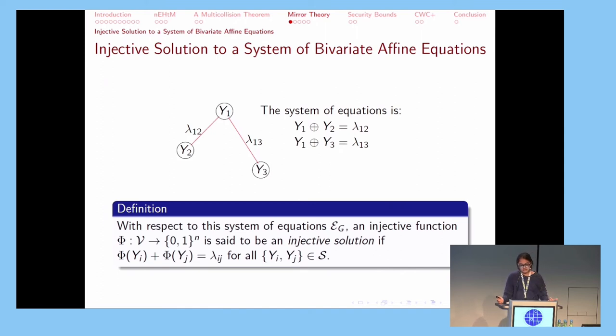The next tool that we have used is an extended version of mirror theory. For that, we first define the system of equations induced by an edge-labeled graph. As we can see here, we have a graph that has labels on its edges. We assume the vertices of the graph to denote the variables of the equations, and whenever a pair of vertices is connected by an edge, it induces an equation in this way. So if y1 and y2 are vertices connected by an edge, then we have the equation y1 + y2 = λ_{1,2}. Then we define an injective solution to a system of equations induced by a graph to be a solution for all these vertices such that the solution is consistent with all the equations.